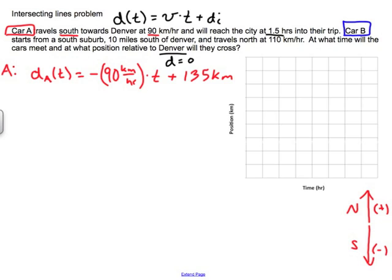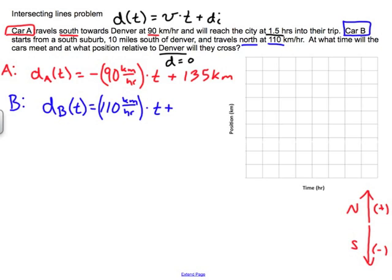For Car B, I need to find its information. D_B as a function of time is going to be equal to: it's traveling north at 110 km/h, so that's a positive 110 km/h multiplied by time. Then for the initial position, it starts 10 km south of Denver, so that's negative 10 km. So D_B(T) = 110T − 10.